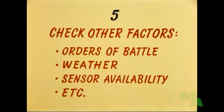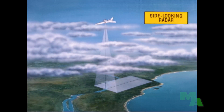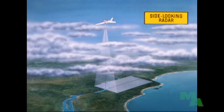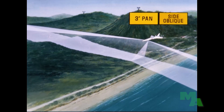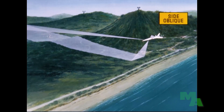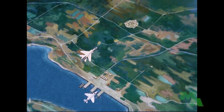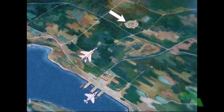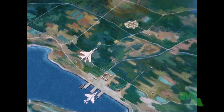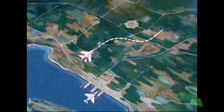The fifth principle of mission planning is to check all known factors affecting the mission. Suppose a weather report indicates cloud cover may obscure targets from the camera lens — then side-looking radar is all the more essential, since it penetrates normal cloud cover. If the 3-inch pan camera is not available for the beach reconnaissance flight, then side oblique cameras will have to suffice. If the enemy has fighter aircraft, it may be necessary for the reconnaissance aircraft to be accompanied by a fighter escort. A known or suspected SAM site may require the use of defensive ECM or a change in the desired flight path.